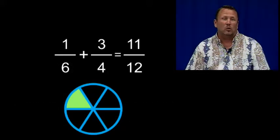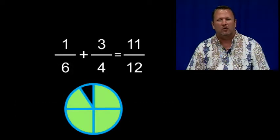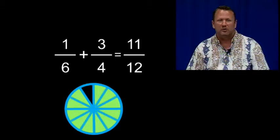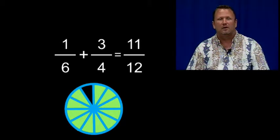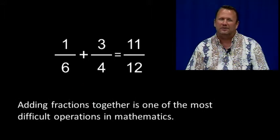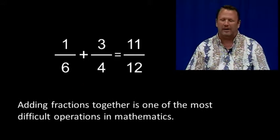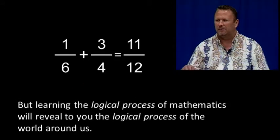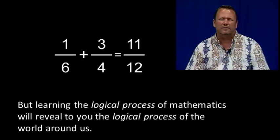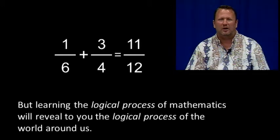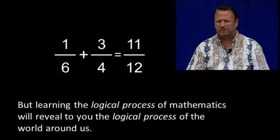So, 1 sixth plus 3 fourths is equal to 11 over 12, or 11 twelfths. Adding fractions together is one of the most difficult operations in mathematics, but learning the logical process of mathematics will reveal to you the logical process of the world around us.